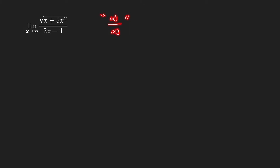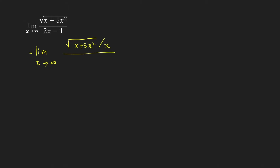The trick in evaluating this limit is to divide the numerator and denominator by the highest power of x in the denominator. So in this case, we only have x raised to 1. So what we're going to do here is to divide the numerator and denominator by x. So you have the limit of x plus 5x squared over x, and then all over 2x minus 1 over x. This is the same thing as multiplying the numerator and denominator by 1 over x.